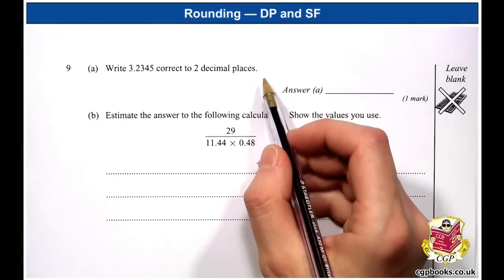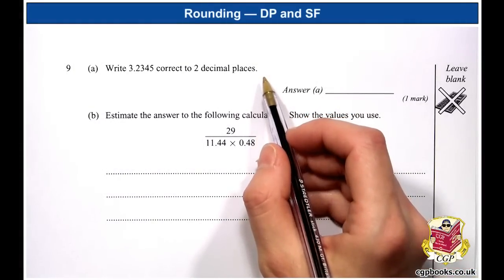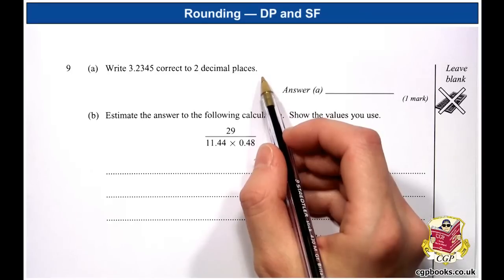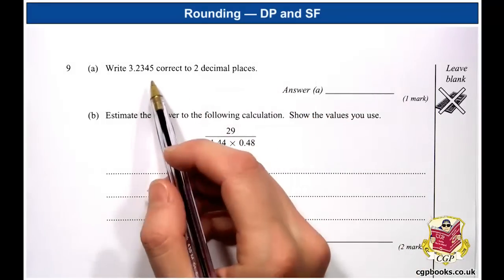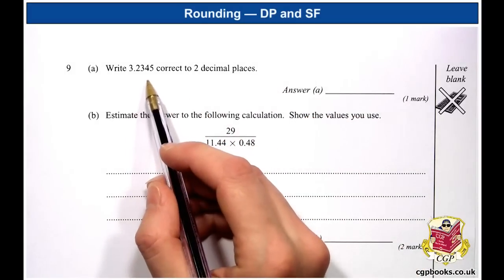OK, so write 3.2345 correct to two decimal places. This doesn't look too bad. The first thing is to find the last digit.